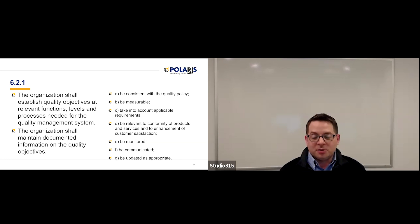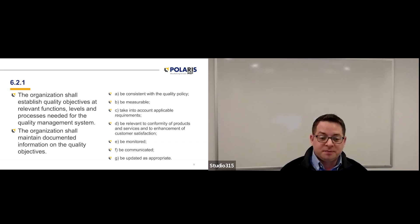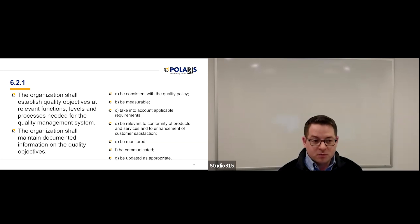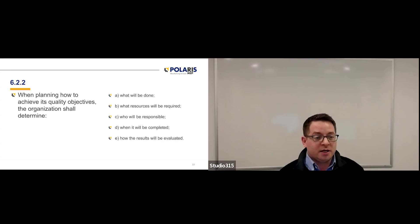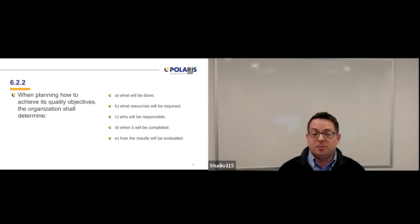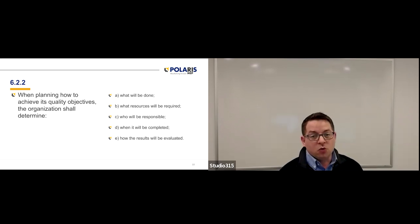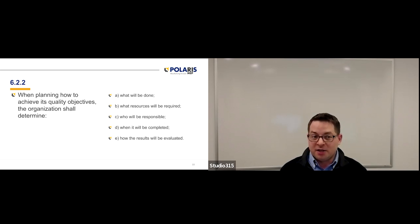They have to take into account applicable requirements. They have to be relevant to conformity of products and services. They have to be monitored. They have to be communicated. And they have to be updated as appropriate. When planning how to achieve its quality objectives, the organization shall determine what will be done, what resources will be required, who will be responsible, when it will be completed, and how the results will be evaluated.